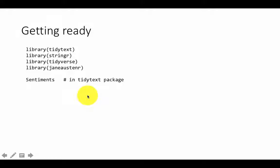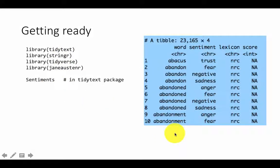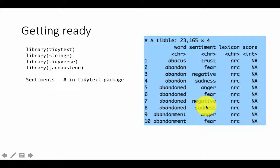All of this clearly depends on being able to associate sentiments with words. That is where the sentiments tibble or data frame in the tidy text package comes into play. Once you've loaded tidy text, looking at 'sentiments' gives you a tibble with 23,165 words. There's a column called 'word,' and for every word you've got a sentiment and a lexicon.